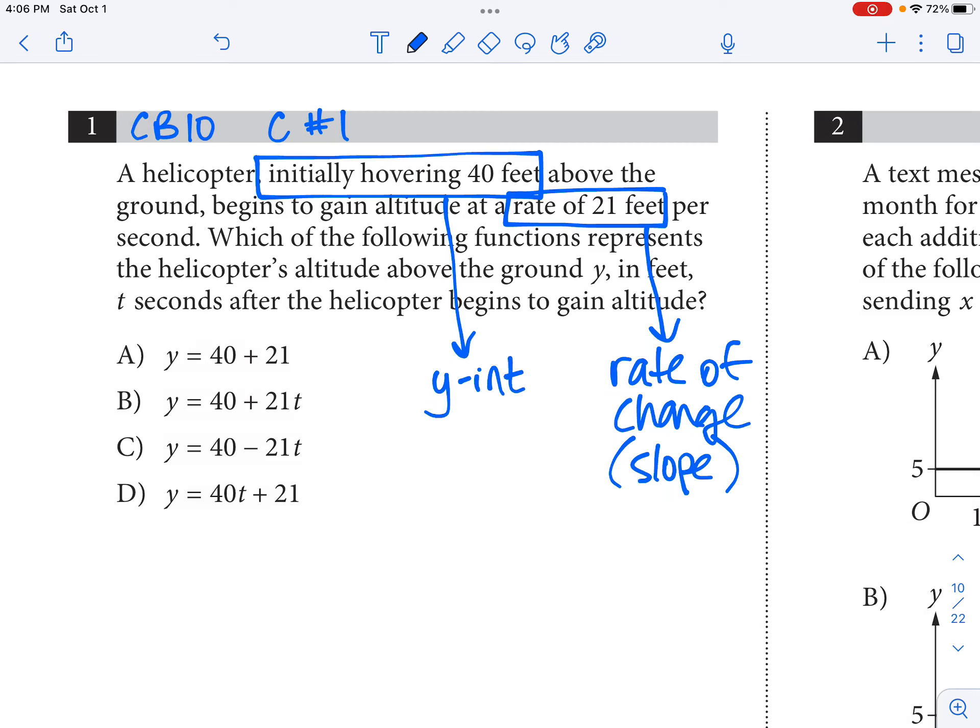College Board 10 calculator portion problem number one. We've got a helicopter initially hovering 40 feet and then it starts to raise, gain altitude at a rate of 21 feet per second.